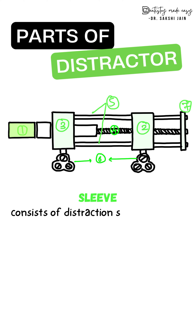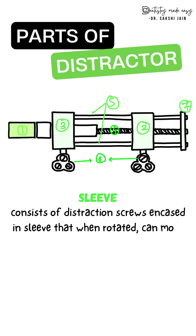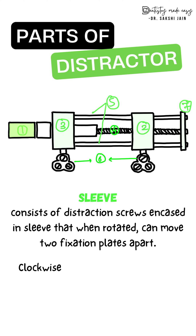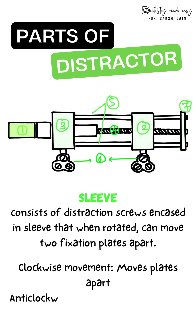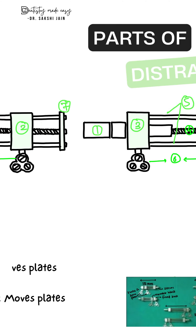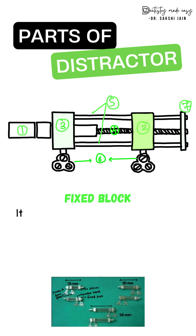The first part is the sleeves. It consists of a distraction screw which is encased or covered in the sleeve. When rotated, it can move the plates apart. Clockwise movement moves the plate apart, and anti-clockwise movement moves the plate together.